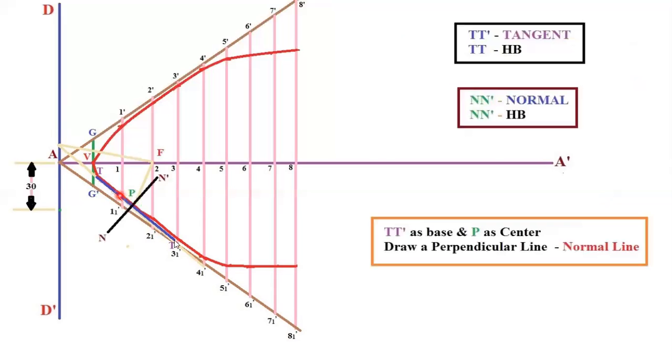Then TT' as base, P as center, draw a 90 degree perpendicular line and that line is called NN', normal. TT' will be tangent. It should be drawn with HB pencil. NN' is normal and it should be drawn with HB pencil.